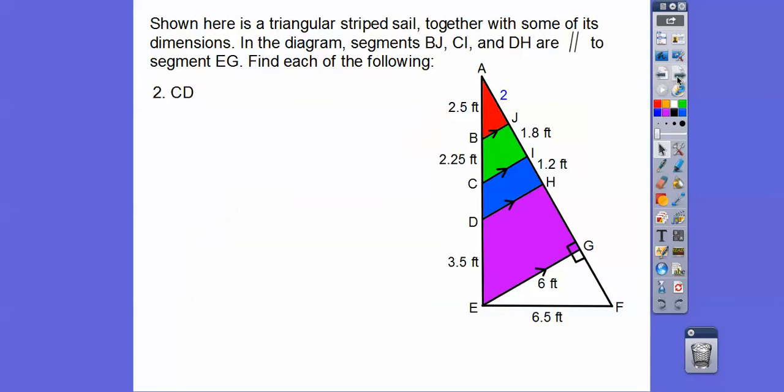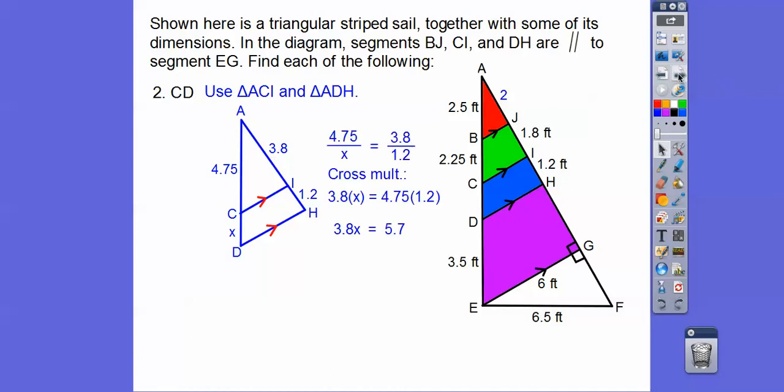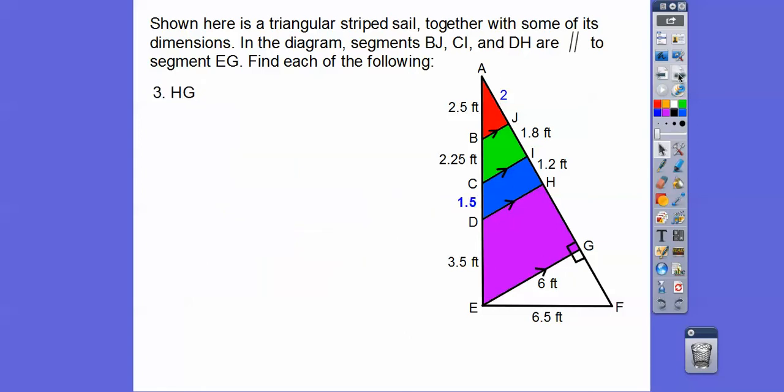Now let's find CD. We're going to deal with these two triangles right here. Let's see if I can convince you where 4.75 came from. Can you see 2.5 plus 2.25 is that? Can you see 2 plus 1.8 is 3.8? So this is what we're looking for. We're going to do it again, top over bottom, top over bottom, and cross multiply. We get 3.8x equals 5.7. So when you divide by 3.8, you get 1.5. Let's plug in 1.5 right there.